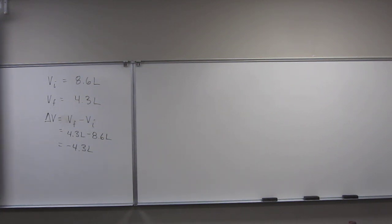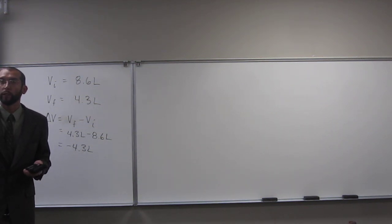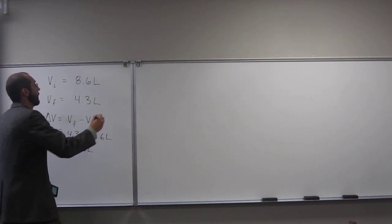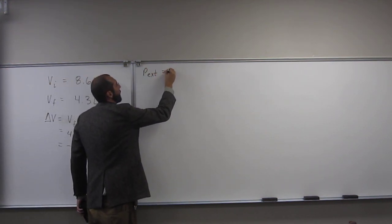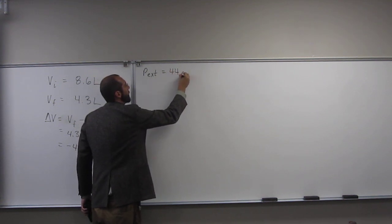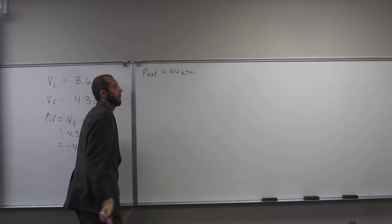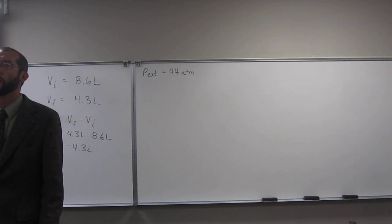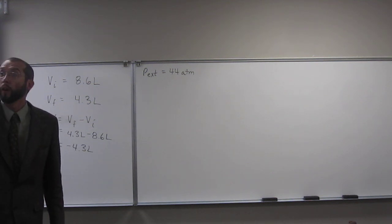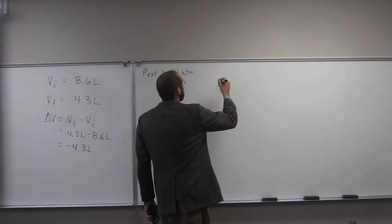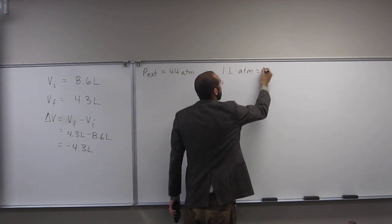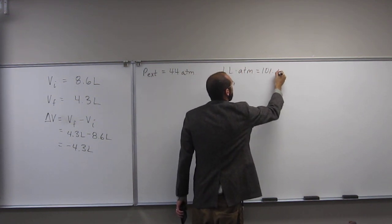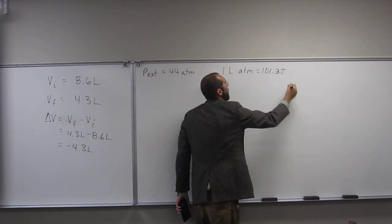So what else do we know? We know the external pressure, right? So what is that? The external 44 atm. What else do we know? Okay, we know that conversion factor, right? One liter atm equals 101.3 joules.